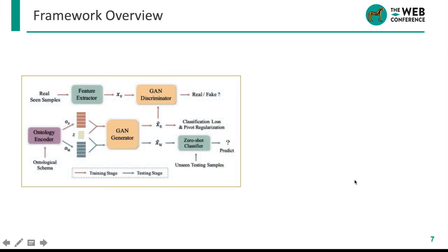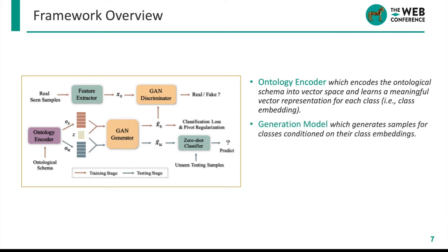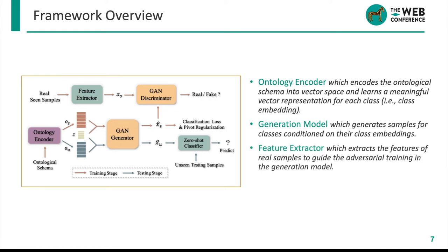Given this ontological schema, we designed a framework onto-ZSL with an ontology-based generative model. It mainly includes four parts. The first is an ontology encoder, which encodes the ontological schema by an ontology embedding method, from which we can learn a semantic embedding for each class. Conditioned on the class embedding, the next part is a generation model where a GAN is adopted to generate samples for each class.